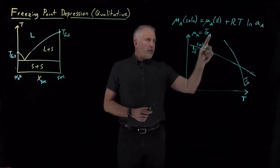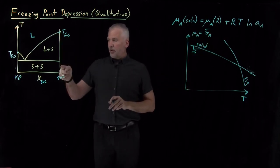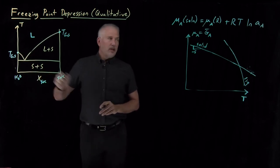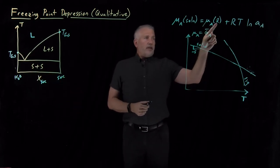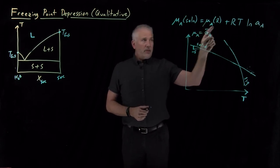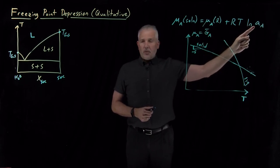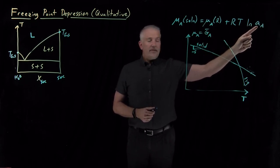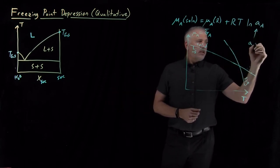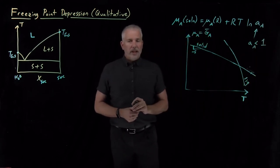Now think about what happens when I convert this liquid into a solution. I take my pure sucrose or maybe pure water and dissolve a little bit of something into it. If the substance I'm talking about is water, this is the chemical potential of pure water. If I dissolve something in that water to make a solution, the activity of the water will decrease.